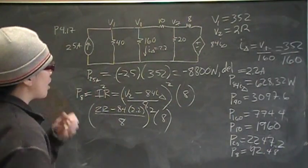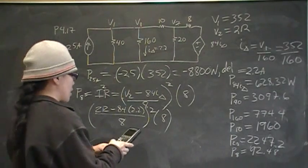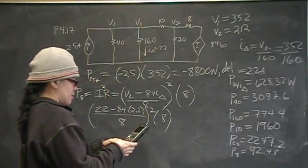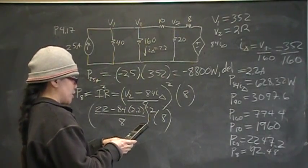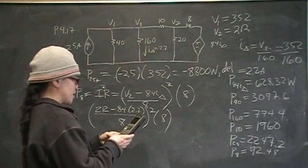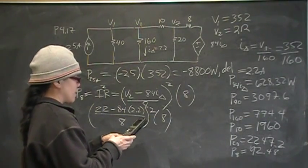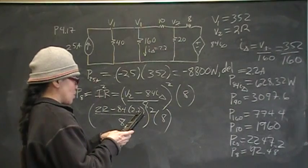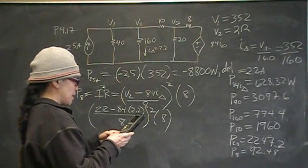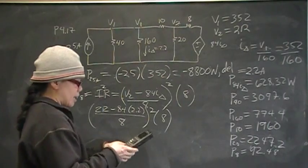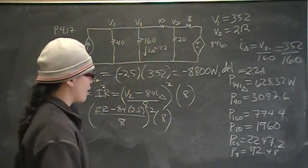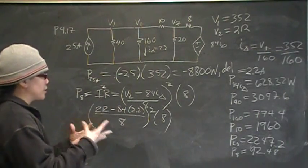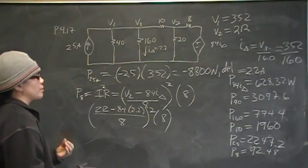Now you add up all the positive terms. So you go 628.32 plus 3097.6 plus 774.4 plus 1960 plus 2247.2 plus 92.48. And it comes up to 8,800. Therefore, power delivered equals power absorbed. And that's your proof.